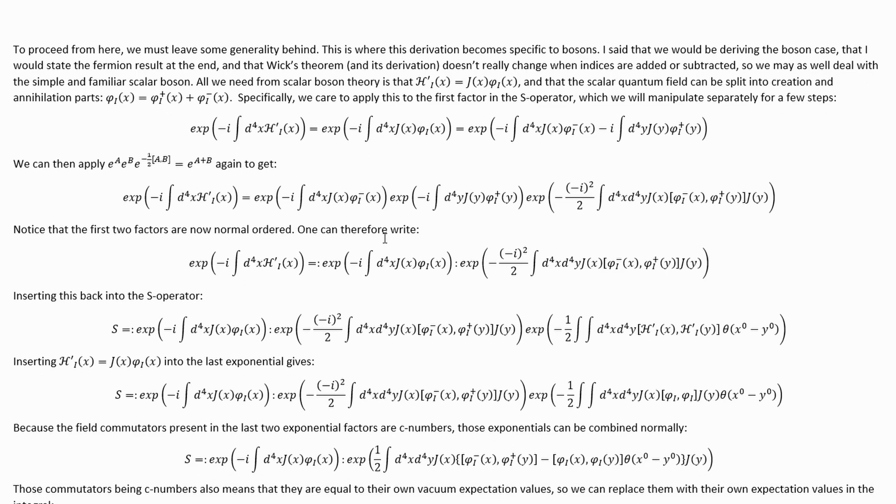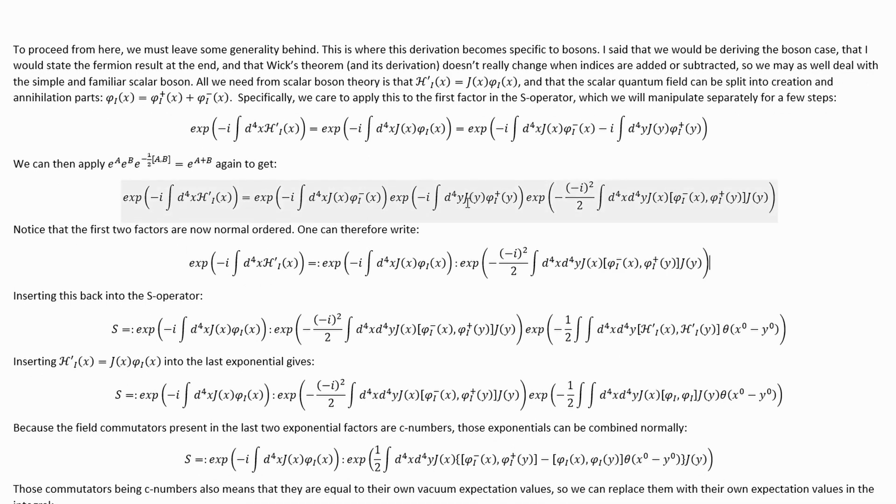Then we can apply this relation again to arrive at this expression for that exponential factor. And here's where it really starts to get interesting because we see that these two factors are normal ordered, allowing us to rewrite this like this. And now we're starting to see normal ordering showing up in all this. And that's very exciting because, of course, that's what we're going for.